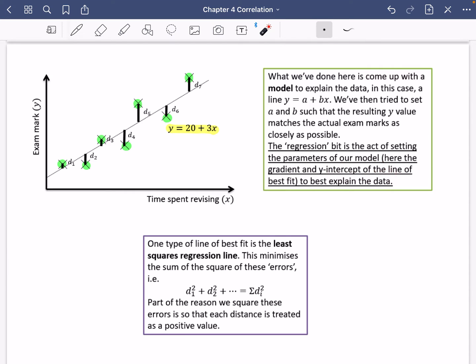Here, the gradient and the Y-intercept of the line of best fit to best explain the data. So the act of regression is figuring out what these two numbers here should be that will make this line of best fit the best one. One type of line of best fit is called the least squares regression line.